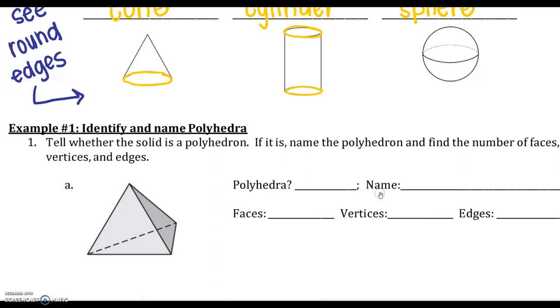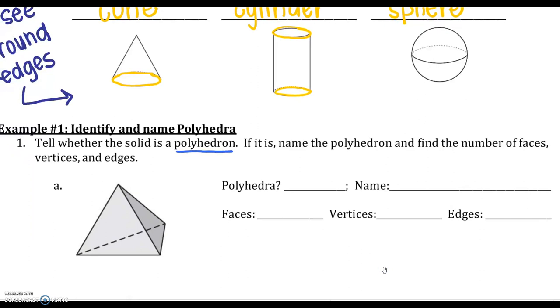So let's do some examples. Tell whether the solid is a polyhedron. So if it is a polyhedron, you would see no round edges. If it is, name the polyhedron and find the number of faces. So the faces are the polyhedrons. The vertices are the points. And the edges are the sides, the line segments. So A is a polyhedron, yes. It comes to a point up here, a single point. So I know it's a pyramid, and I'm going to look at the base. The base is a triangle, so I'm going to name this a triangular pyramid.